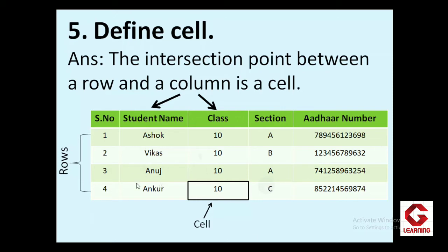Next, a cell is the intersection of a row and column. For example, this highlighted cell is the intersection of the last row and the third column. Similarly, another row containing class details and the section column intersect at a particular point, forming one cell containing the data 'B'. So a cell is the intersection of a row and column.